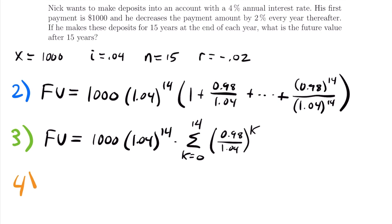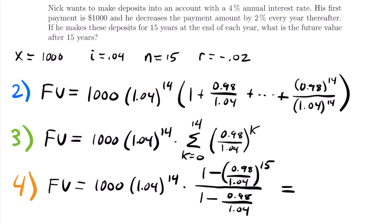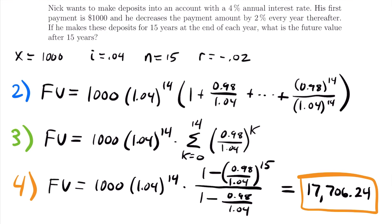Step four: compute the future value. The future value equals 1,000 times 1.04 to the 14th power, times (1 minus (0.98/1.04) to the 15th power) divided by (1 minus 0.98/1.04) — where n equals 14, so n+1 equals 15. Plugging all of this into a calculator gives a future value of $17,706.24. That is the final answer — the future value of the geometric annuity in this scenario.